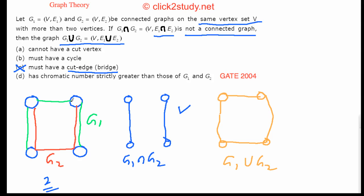The chromatic number of G1 is 2 — it's a spanning tree. For any tree with more than one vertex, you need exactly 2 colors. The same applies to G2. G1 ∪ G2 is a cycle of even length, which also has chromatic number 2. So option D is not always true — we have a counter-example, and that's enough to eliminate it.